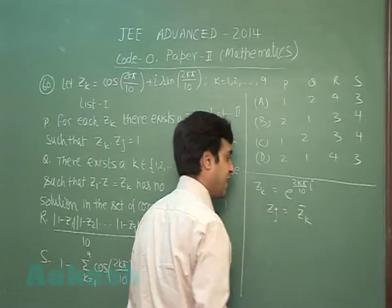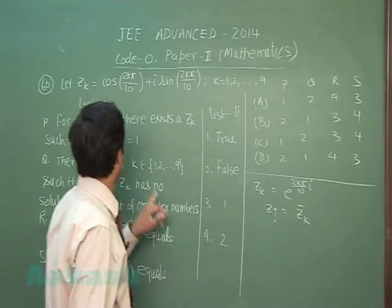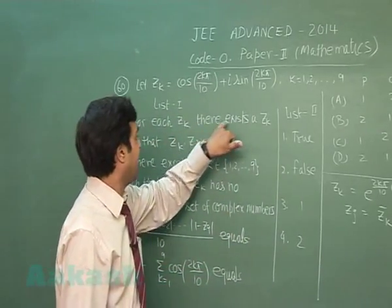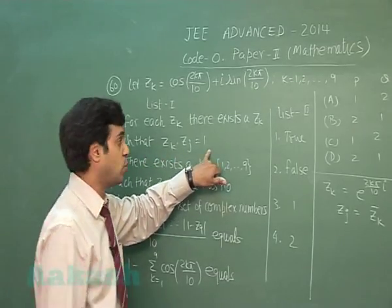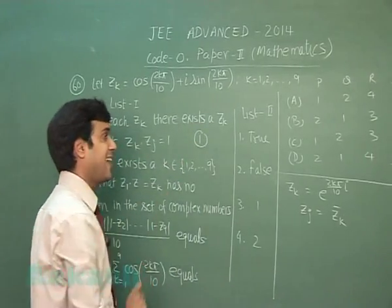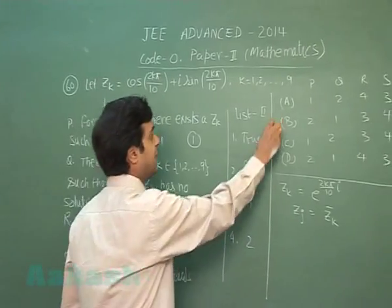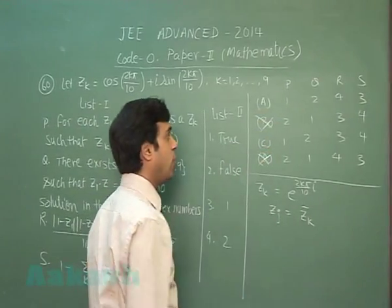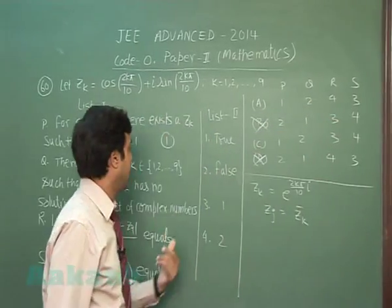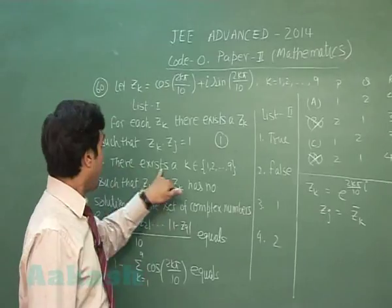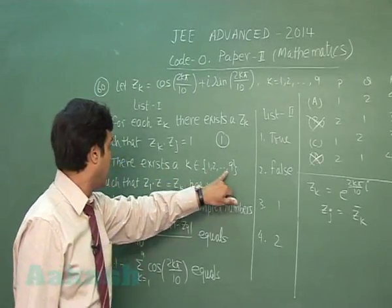Now zk into zj equals 1. Clearly we have zj equals 1 upon zk, that is zk bar. So it reads: for each zk there exists a number such that this product is 1. This statement is true, means first is correct. So we can see that B and D are ruled out.